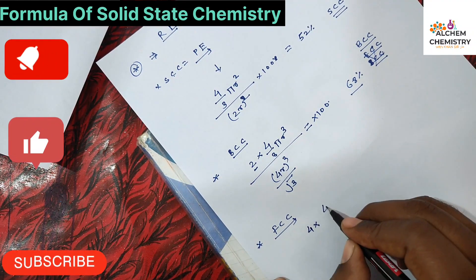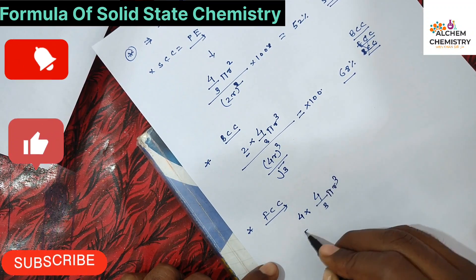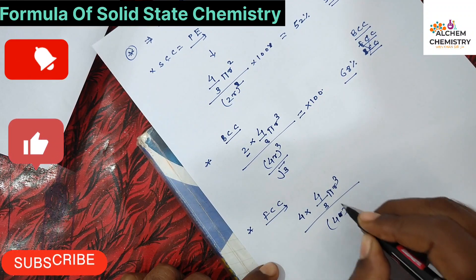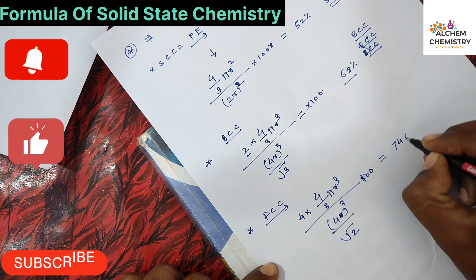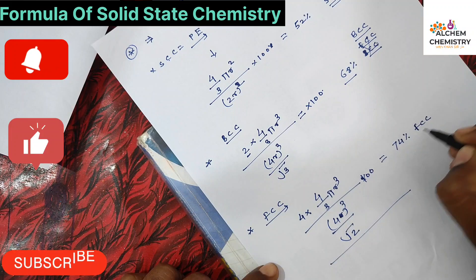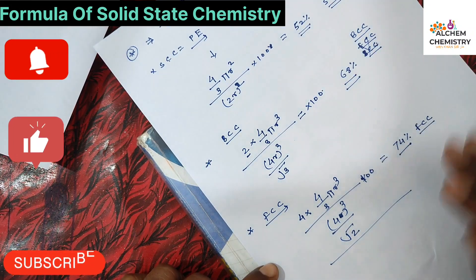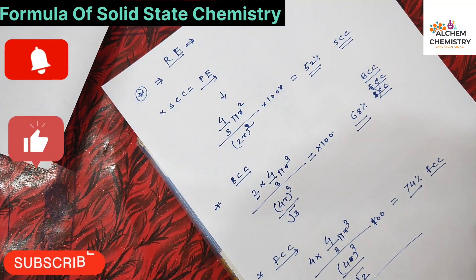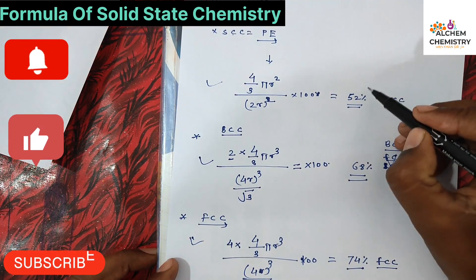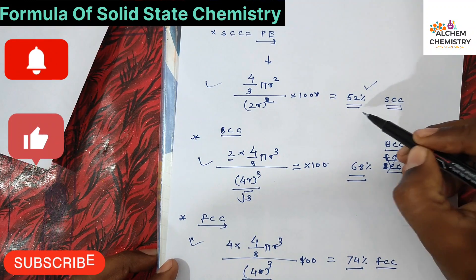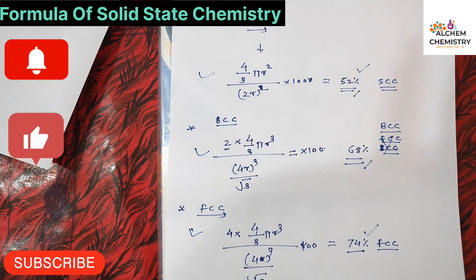For FCC, the formula is 4 into (4/3 · π · r³) divided by (4r/√2)³ into 100, giving approximately 74% packing efficiency. So to summarize: packing efficiency for SCC is 52%, for BCC is 68%, and the highest packing efficiency is for FCC at 74%. These packing efficiency values should be remembered.